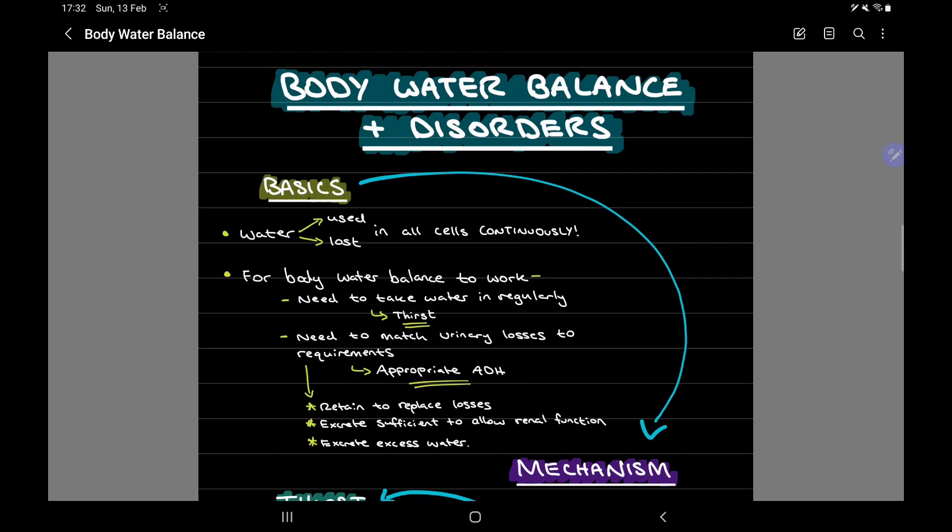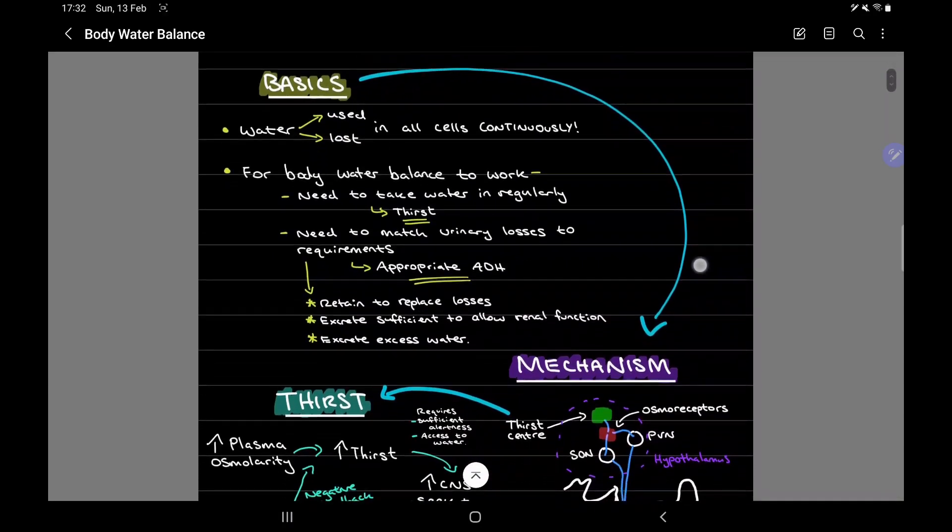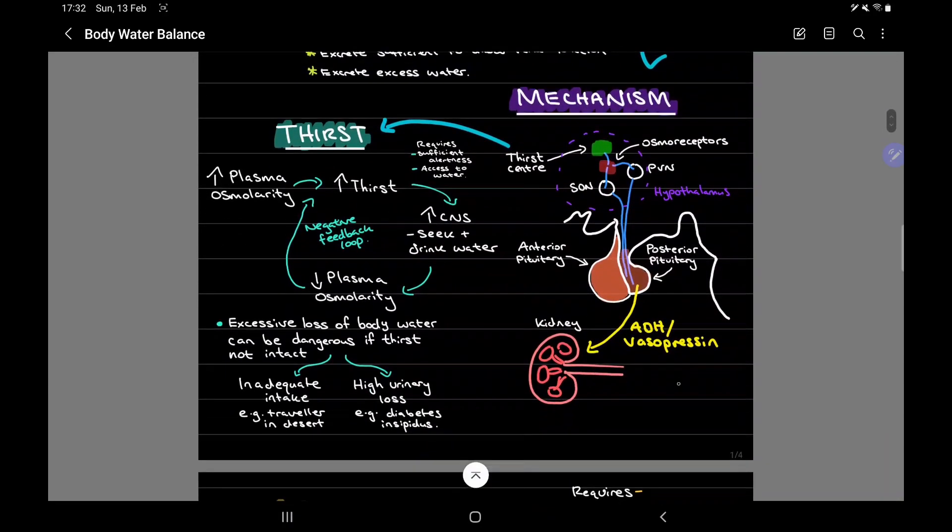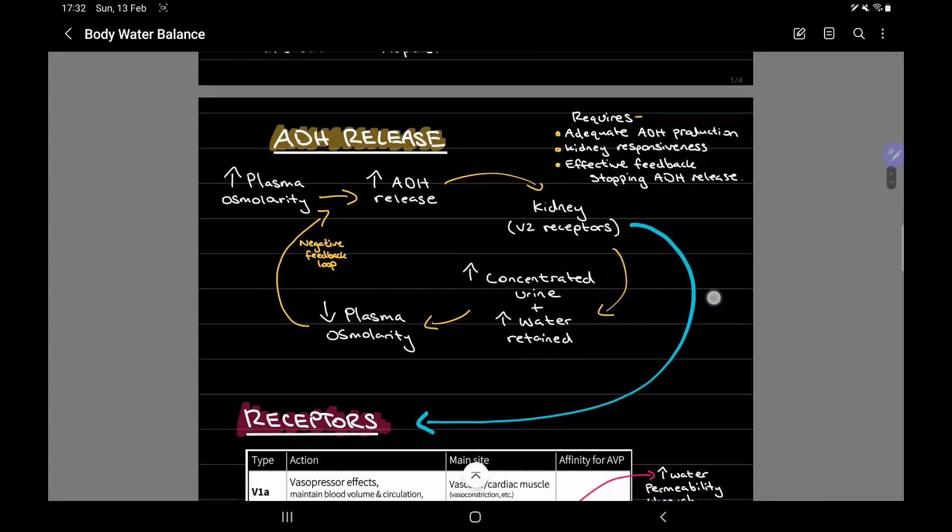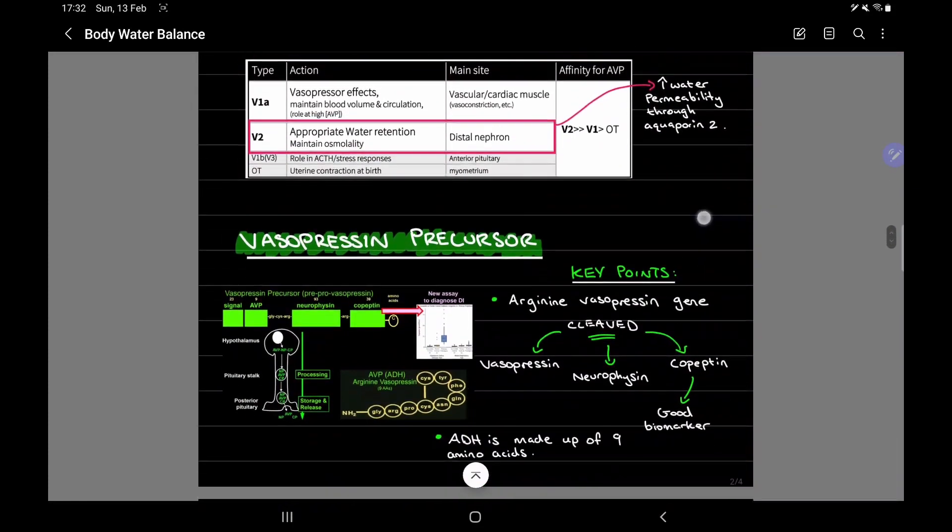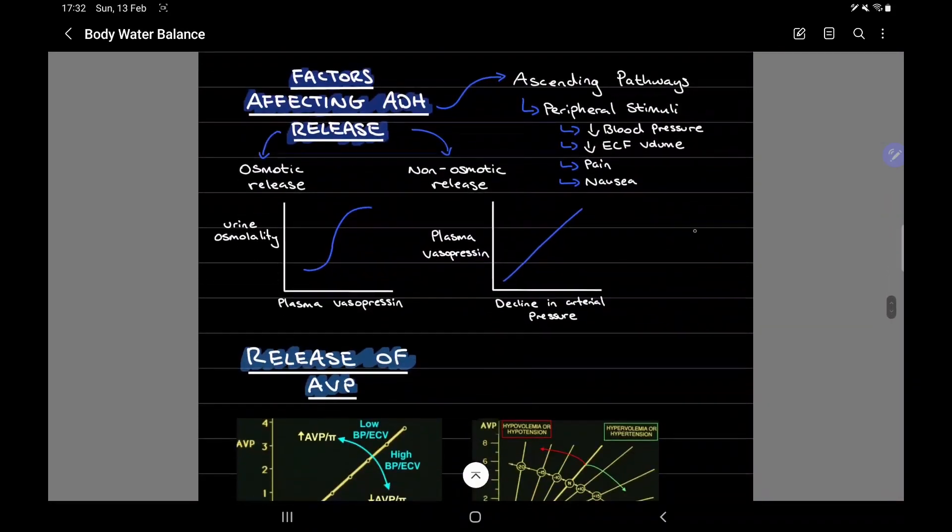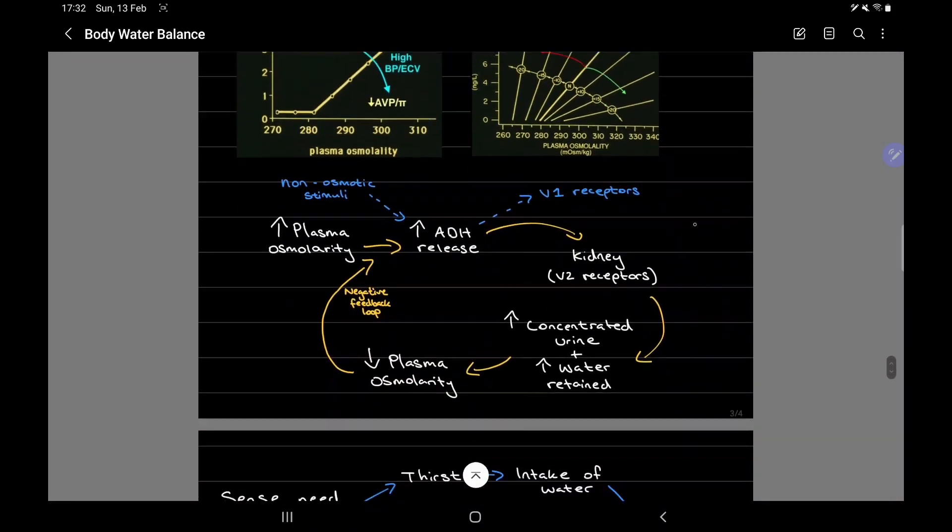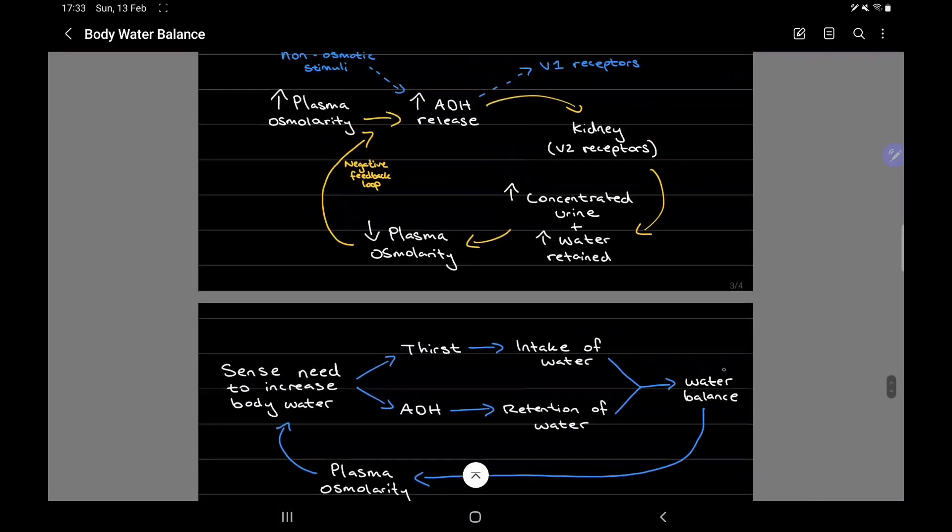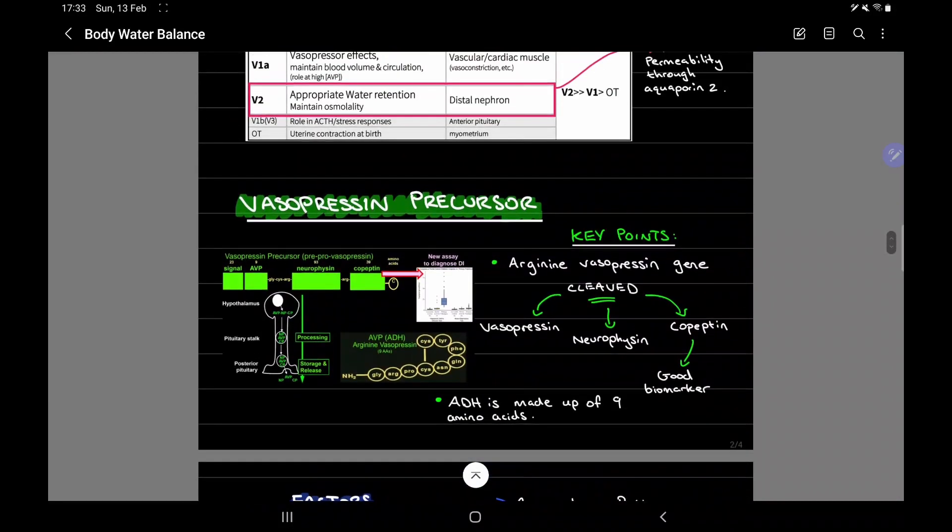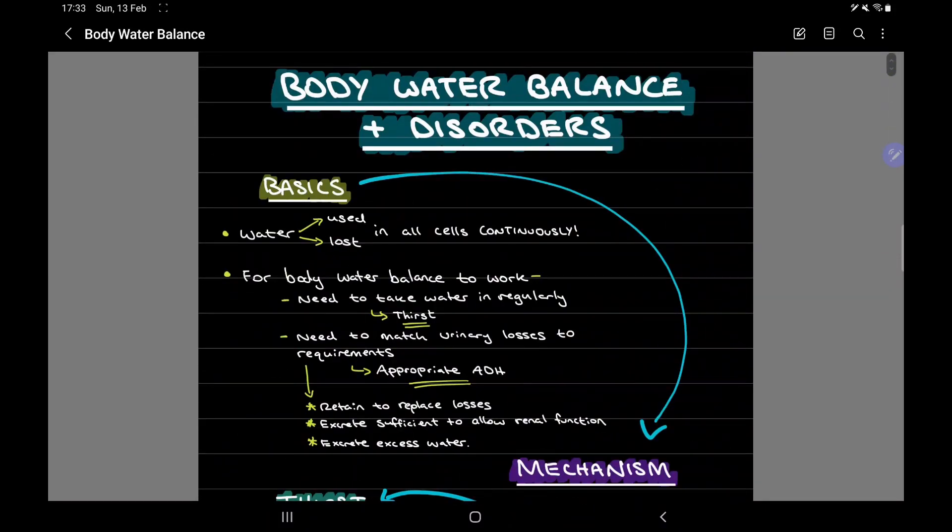So you can see here I've got body water balance and disorders, then I've got flowcharts, diagrams, and I've just tried to summarize it as much as I could. I've got some images in here as well, but this is the kind of thing that I was trying to go for to help me understand this topic a bit better. And it's certainly better than having to go through 25 slides of work. This is only four pages and I now understand the topic so much better.